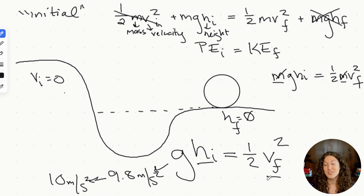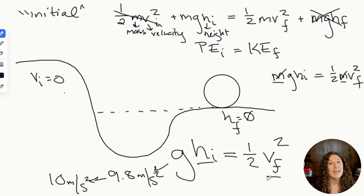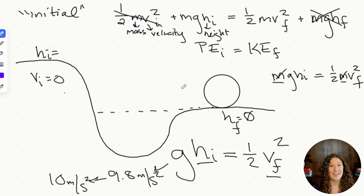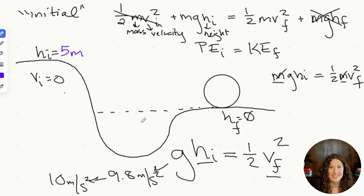On the MCAT, with just two variables, they'll give us one and ask for the other. They might give us an initial height of 10 meters and ask for the final velocity at the bottom, or give a final velocity of 10 m/s and ask how high the object started. Let's do a practice question — initial height is 5 meters; find the final velocity. Pause and try it on your own.